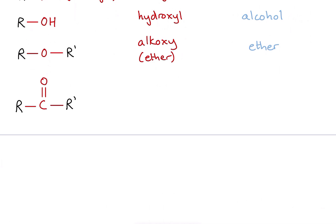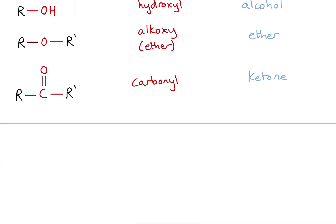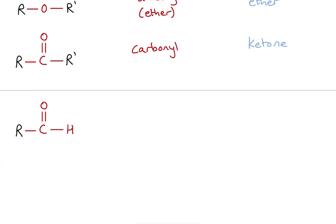Now I've got a carbon double bonded to an oxygen in the middle of a carbon chain. The functional group is called the carbonyl functional group. Because the carbonyl group is in the middle of a chain, this class is called the ketones. We can also have a carbonyl functional group where the C=O is at the end of a carbon chain, and therefore is only bonded to a hydrogen, not another carbon. When my carbonyl functional group is at the end of a carbon chain, it's still the carbonyl functional group, but it now belongs to a class of compounds called the aldehydes.